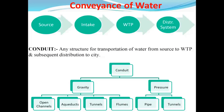Here is a diagram which represents the conveyance of water. First one is the source. Then we have to carry that water from the source to the intake, then from intake to the water treatment plant, and then from the water treatment plant it is given to the distribution system, and through that distribution system it is conveyed to the consumer.